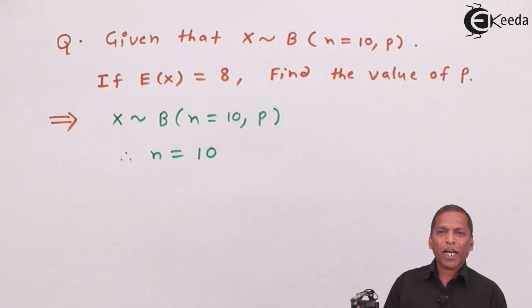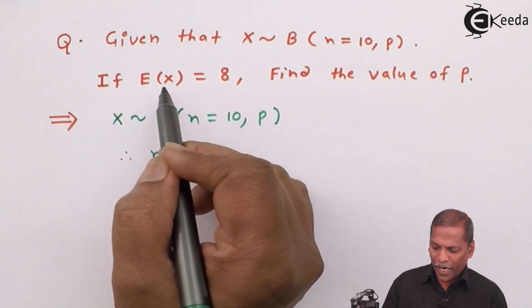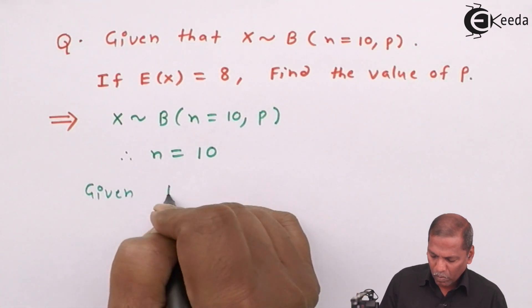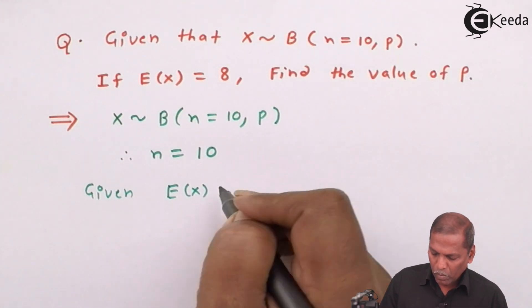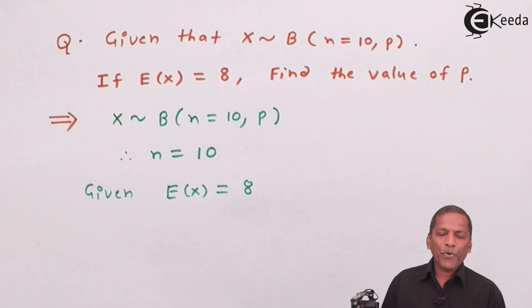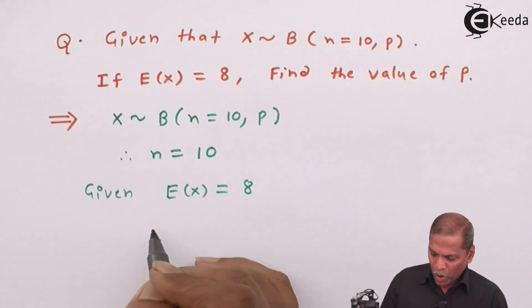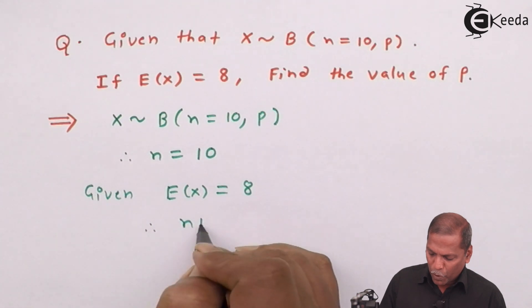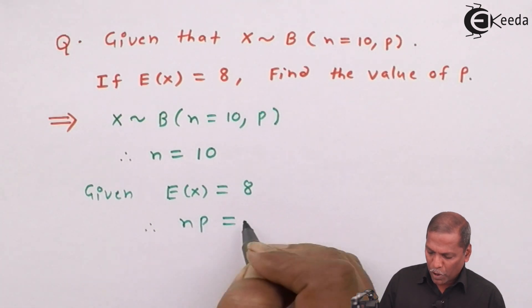Also, given expected value E(X) is equal to 8. Therefore, n into P is equal to 8.